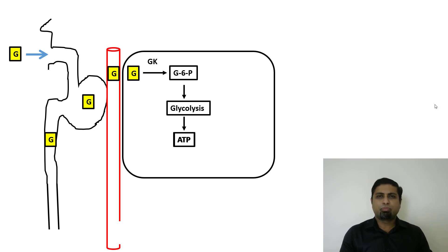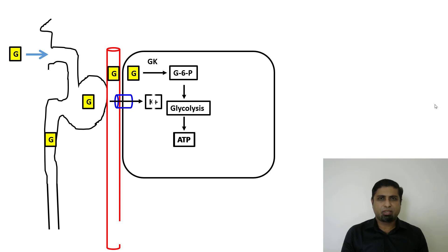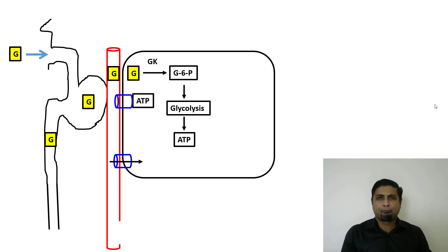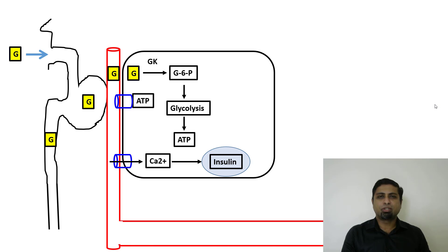The beta cells of the pancreas contain constitutively open potassium channels, which allow potassium to enter the beta cells from the plasma, contributing to the voltage of the cell. When the patient takes a glucose-rich meal, ATP is generated and blocks these constitutively open potassium channels. The cell gets depolarized, voltage-sensitive calcium channels open, and this causes the release of preformed insulin stored in storage vesicles into the plasma.